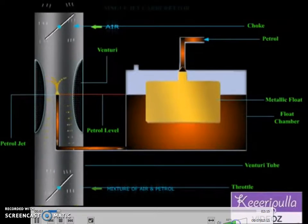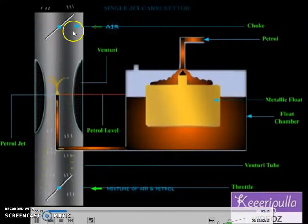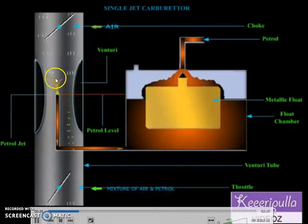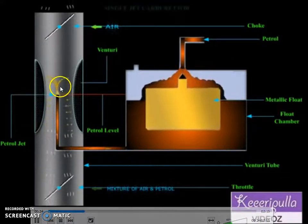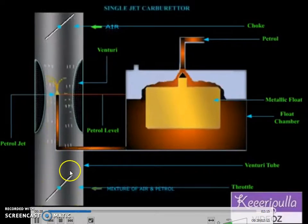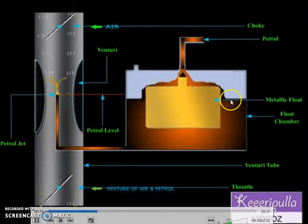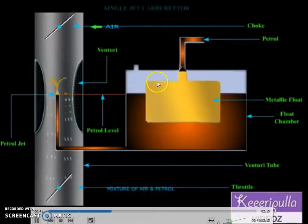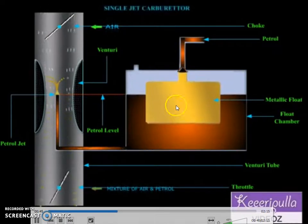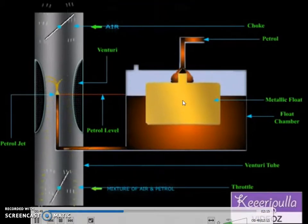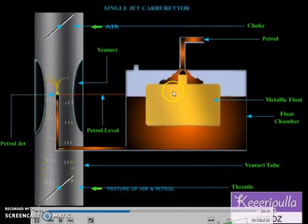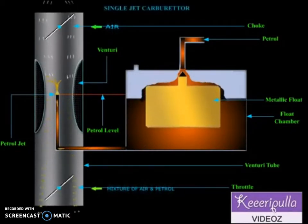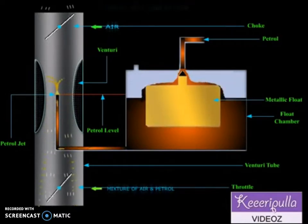In the video you can see air coming from the top — the white color particles represent air. When air comes in, a vacuum is generated, and because of the vacuum petrol comes out, shown by yellow particles, mixing with the air and moving outward. When petrol comes out the fuel level drops, the float moves down, petrol enters and the level increases again — the float continuously moves up and down, maintaining the fuel level. This video clearly shows conceptually how the carburetor works.